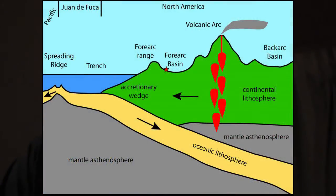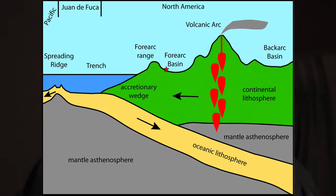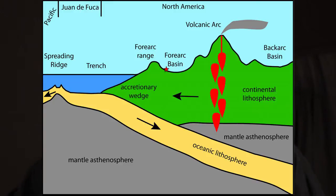This cartoon shows our tectonic environment: we have a spreading ridge offshore, a subduction zone with very little trench because it's full of sediment, a forearc range which is the Coast Range just to our west here in McMinnville, a forearc basin which is the Willamette Valley or Puget Lowlands to the north, a volcanic arc, and then in Washington a large back-arc basin to the east of the range.